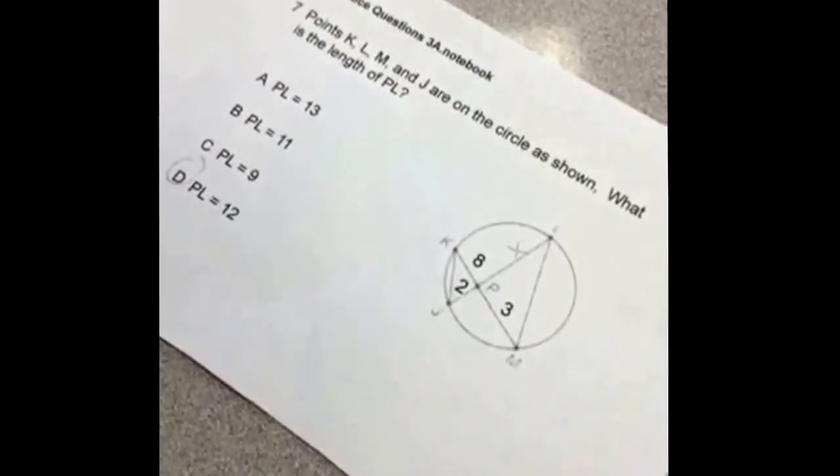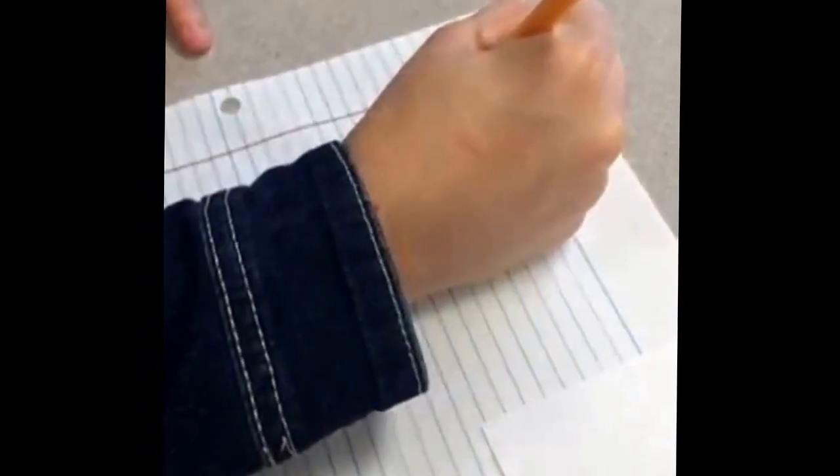The triangles in the circle are similar. So you make a blank proportion and you put 8 over 2 since they're in the same triangle, and x over 3 since they're in the same triangle.